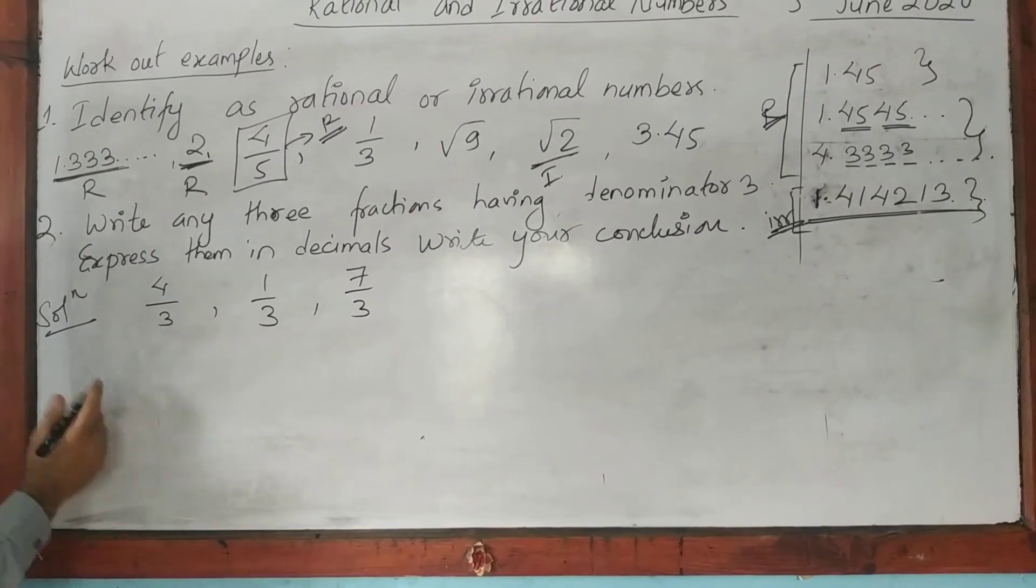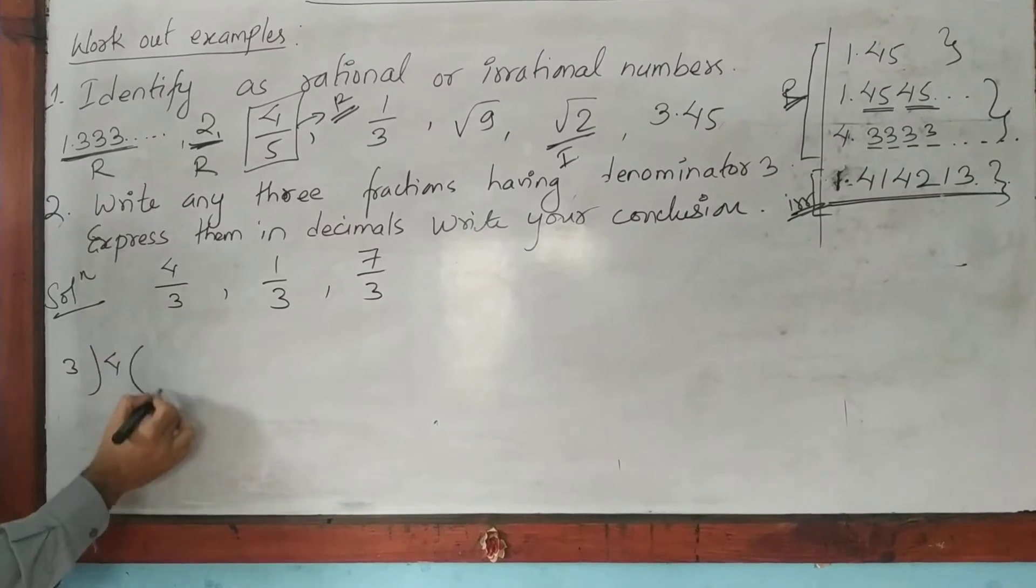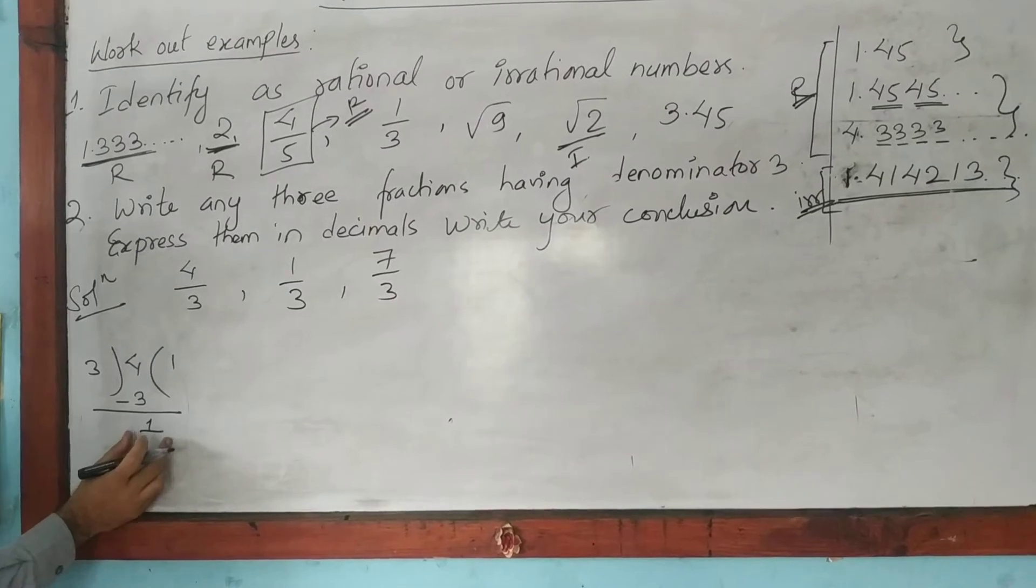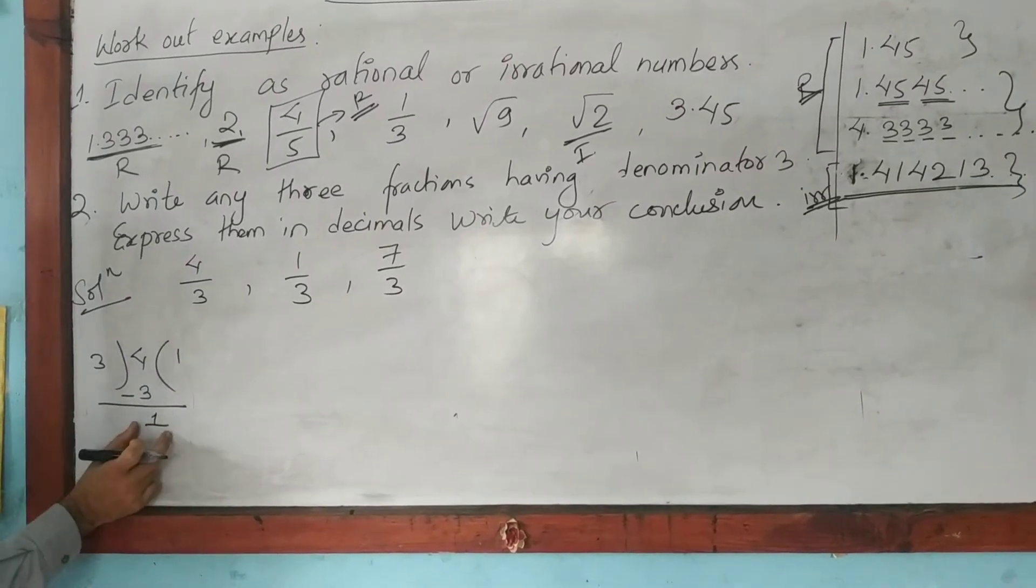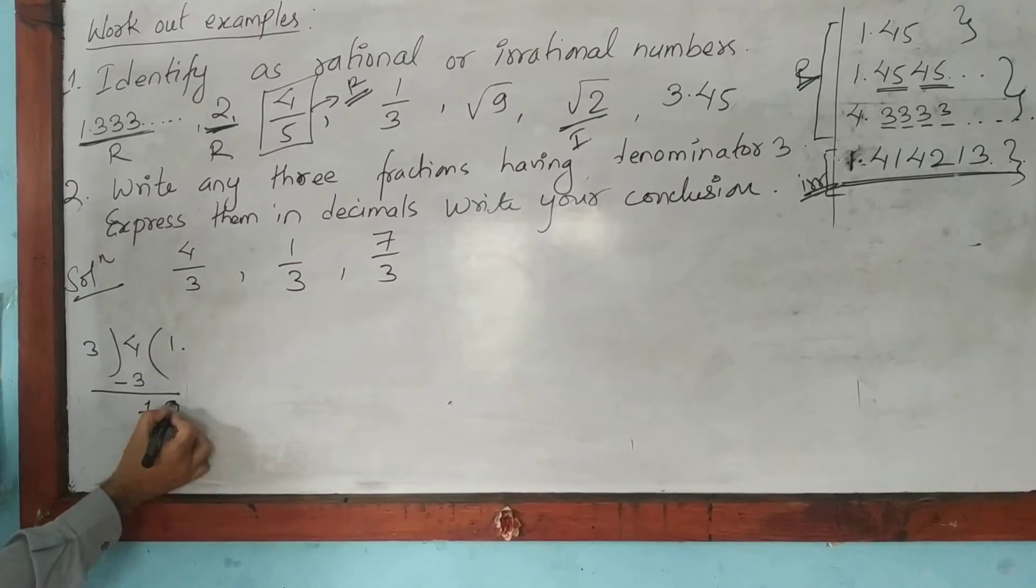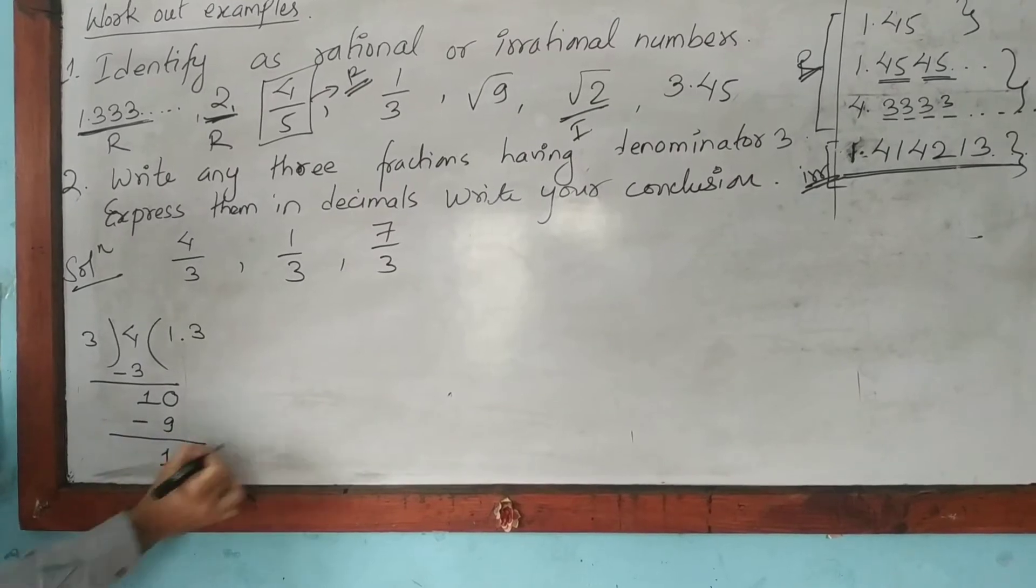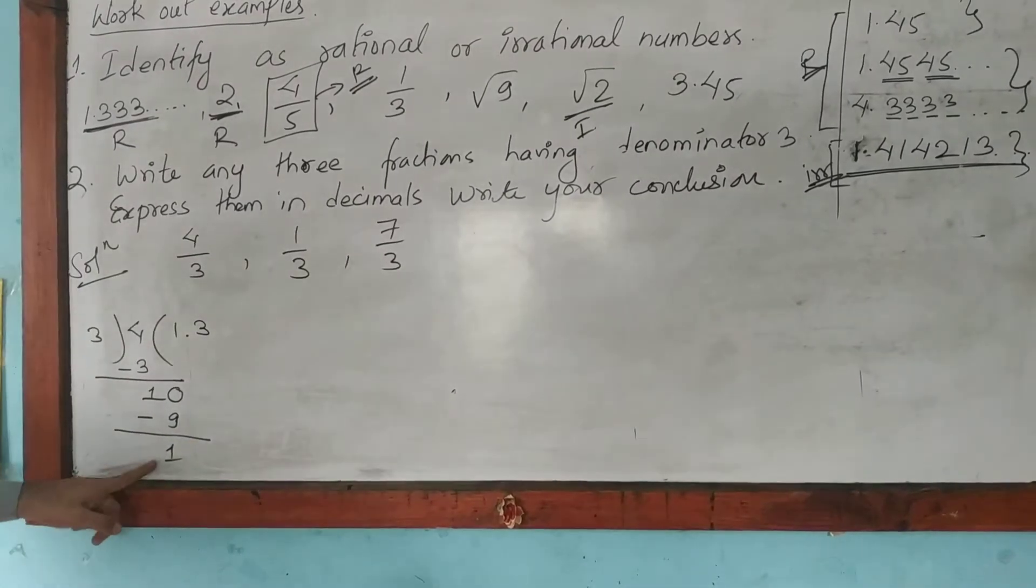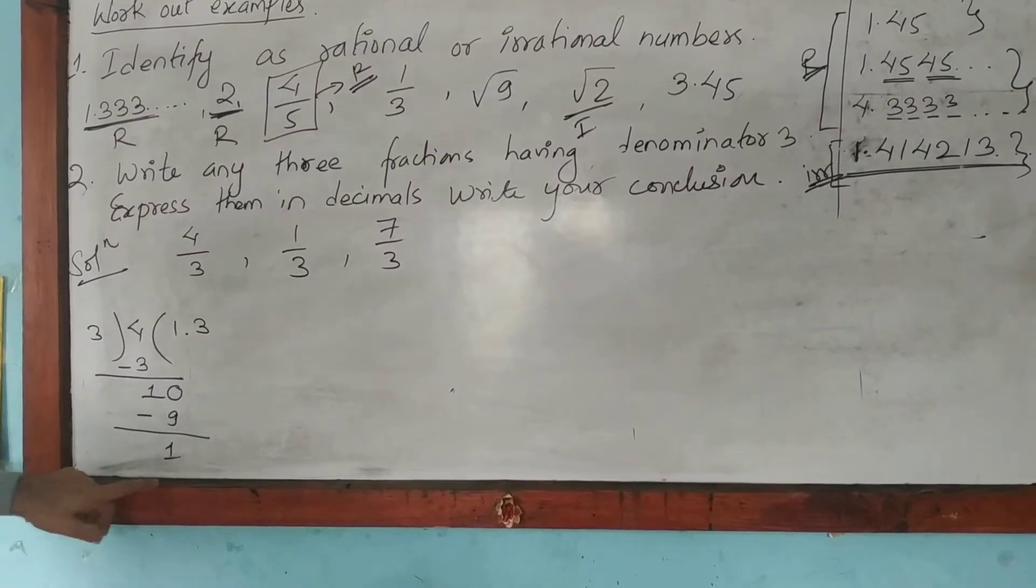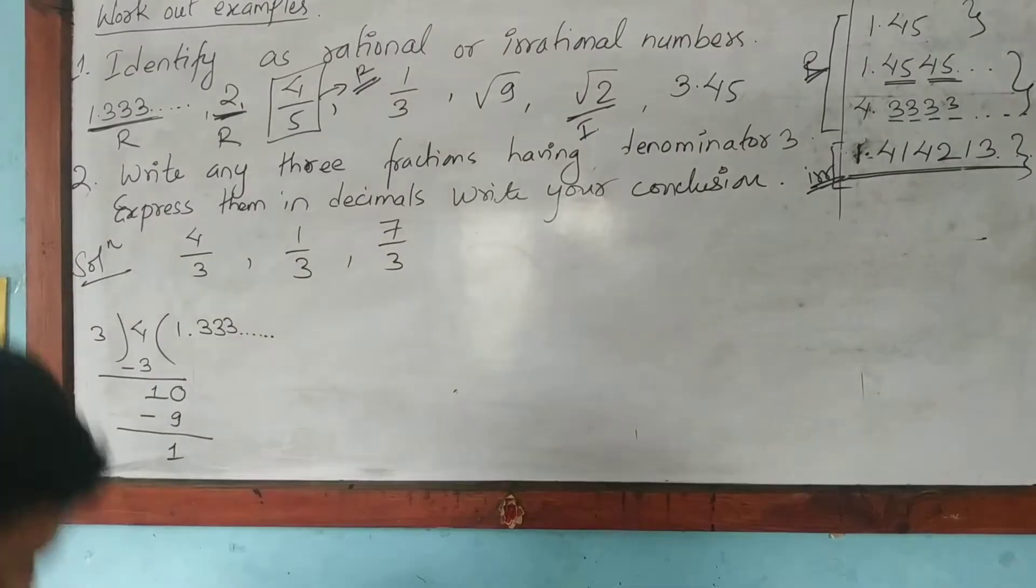Now, express them in decimals. That means we have to divide. I am going to do one. 4 is divided by 3. 3 into 1 is 3, the remainder is 1. Now if we have to divide 1, since 1 is not divisible by 3, let's introduce a point so that we can write here 0. Now 3 into 3 is 9. That means again the remainder is 1. Again, if we follow the process, it will be 10, and the remainder is 1. That means it will be 1.333 and so on.